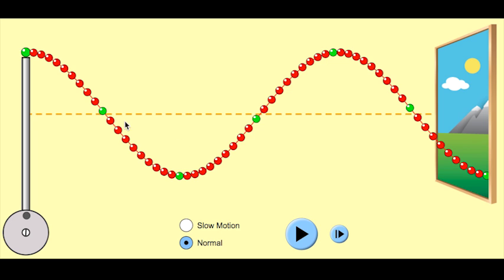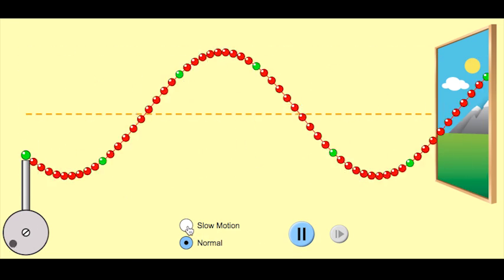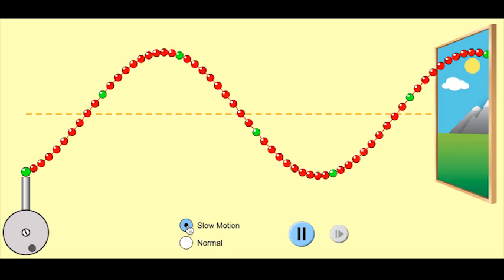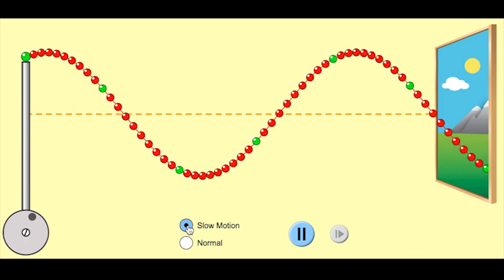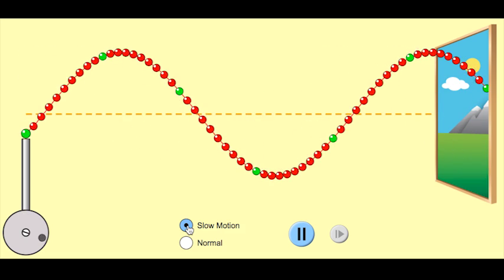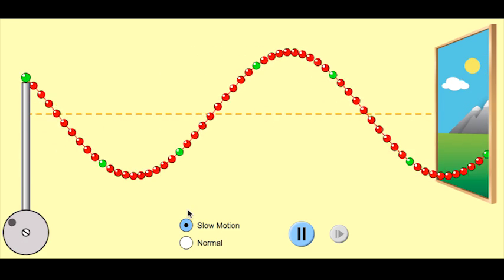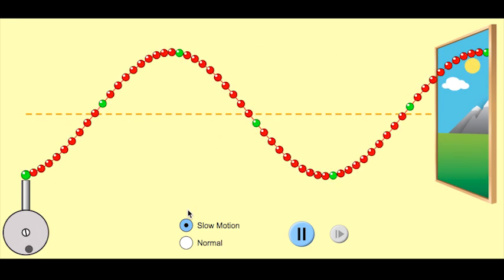So, for example, this dot here and this dot here, if you were to observe it, you'll see that they're, generally speaking, going to be in sync with each other. Two particles that are in sync with each other, they are separated by one wavelength.